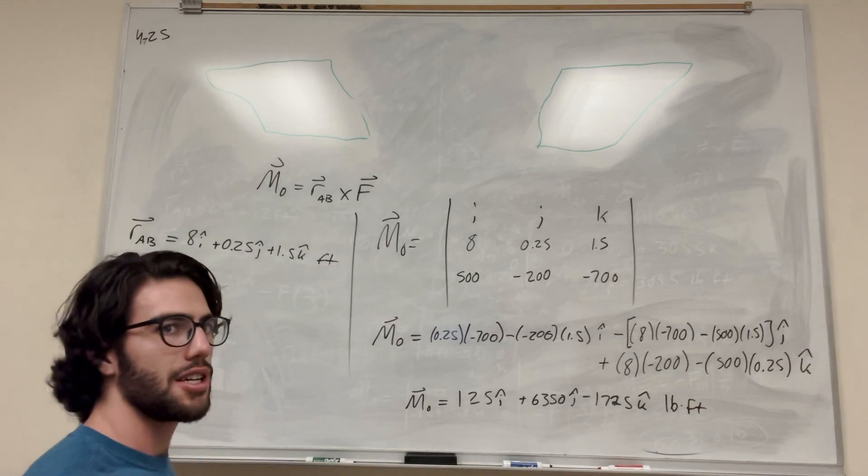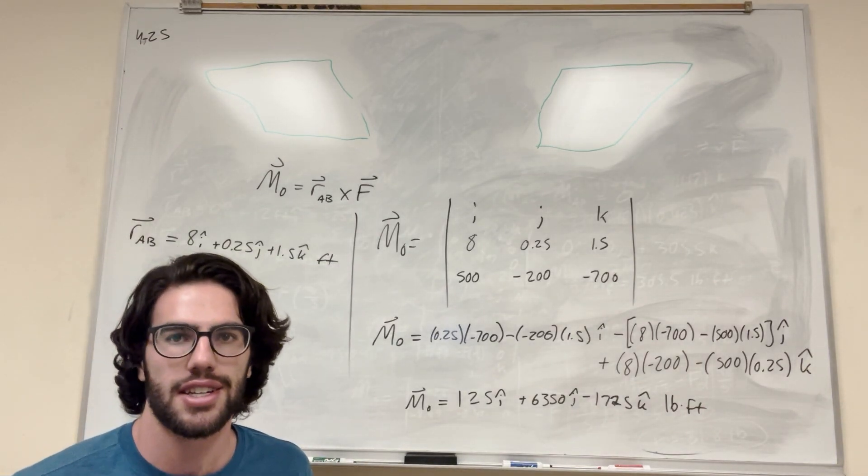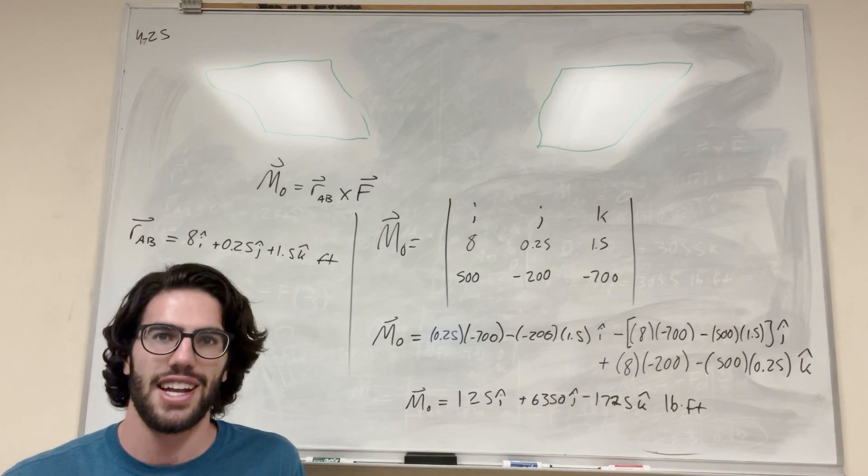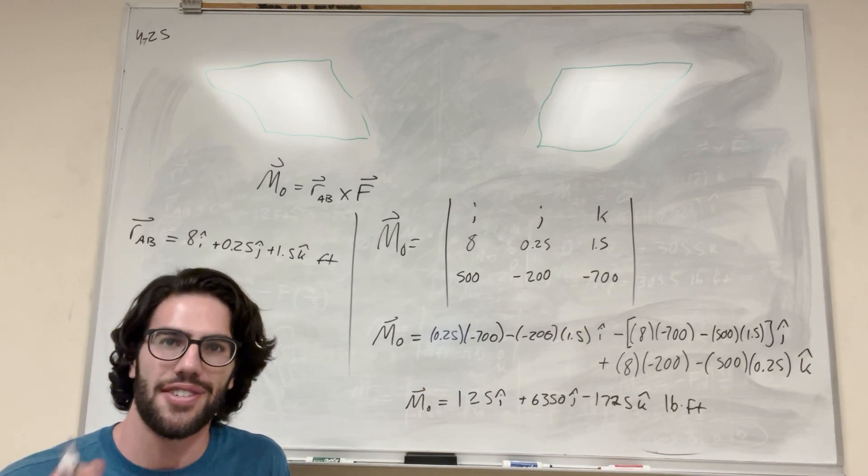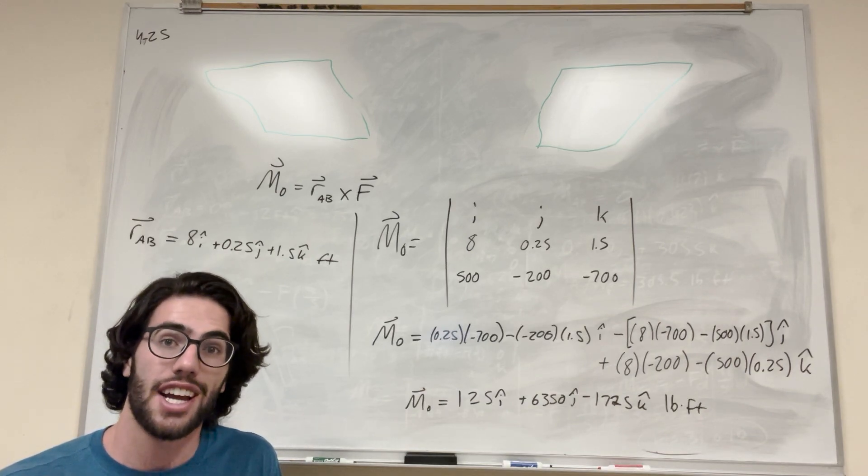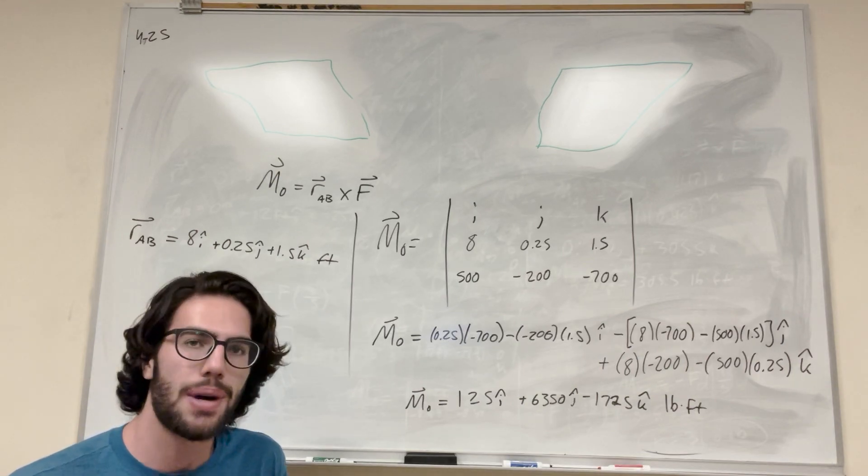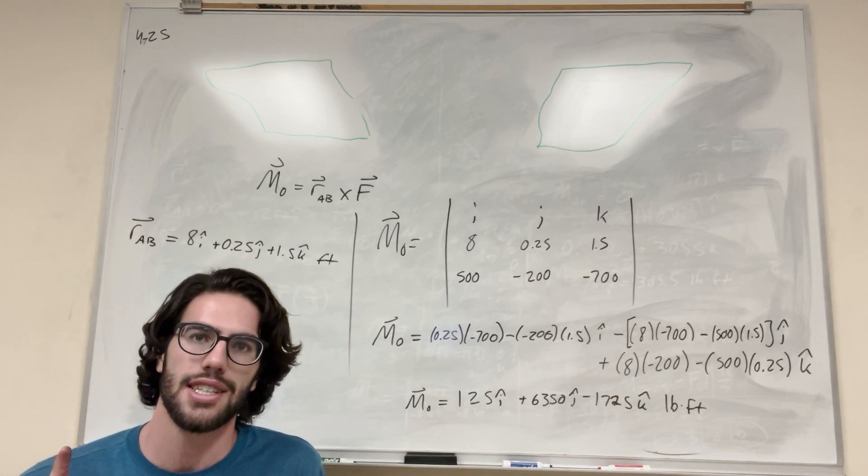So there you go. That's how you do this problem, just about finding the cross product and finding the position vector, but this is really as simple as a problem as you can get. So if the problems get more complex, feel free to come back to me, my channel, and I'll have a lot of these kind of problems on. And yeah, if you want to practice, just check it out. I'll see you in the next one, guys. Peace.